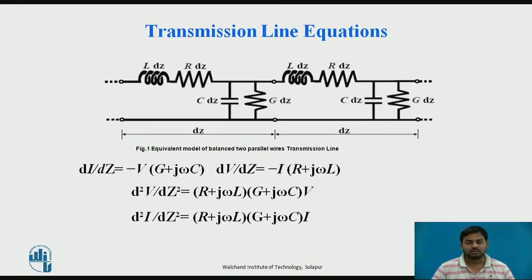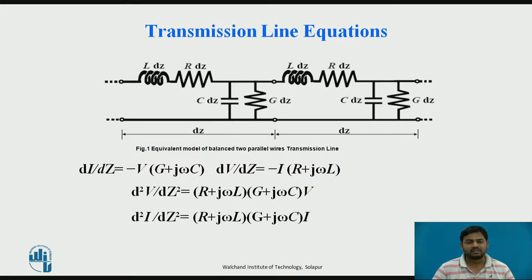In this transmission line equation session, a two-wire parallel wire line is modeled as resistance, conductance, capacitance, and inductance. Resistance and inductors are distributed over the line. We are using the two parallel wire transmission line because of its simplicity.